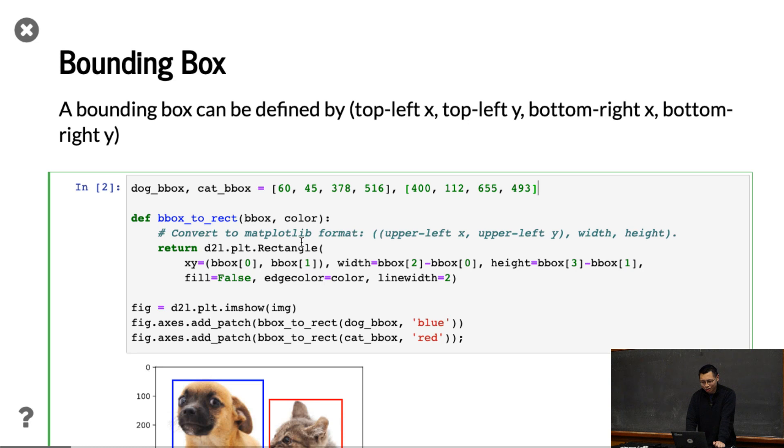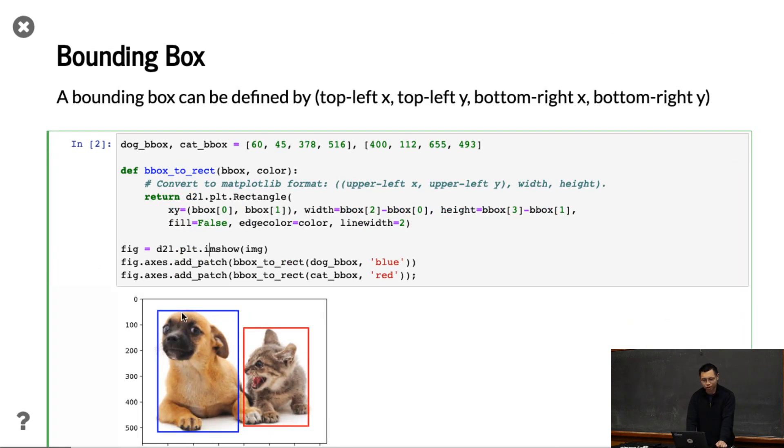Then this is a cat. I can show a function here to plot this thing. You can ignore the code here. You can see that this is the dog, this is a cat. This is zero for the x and y axis.